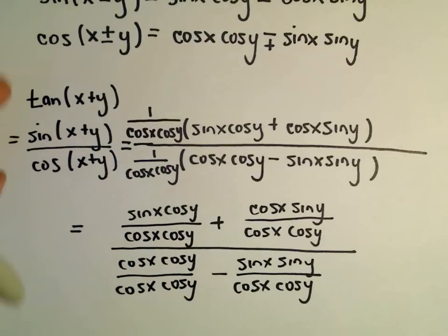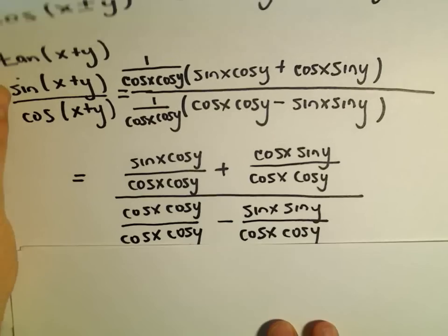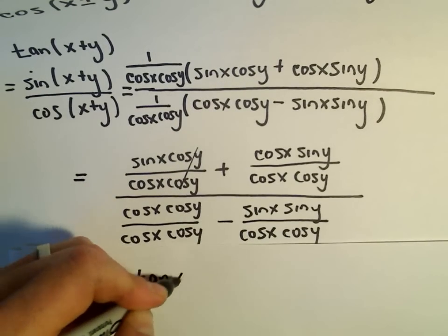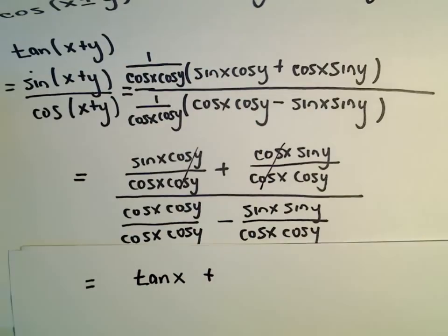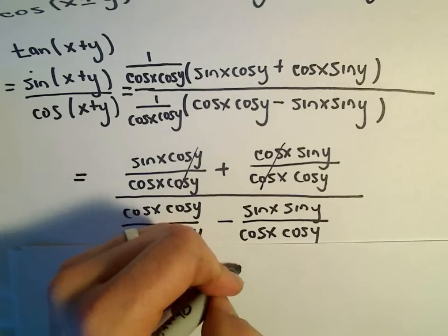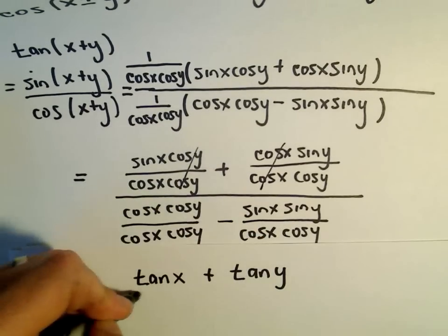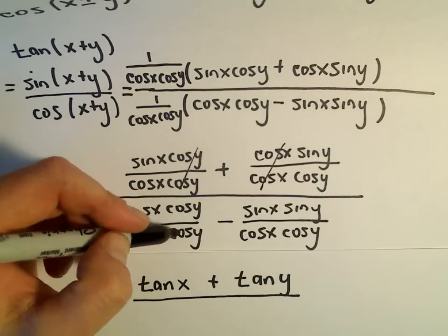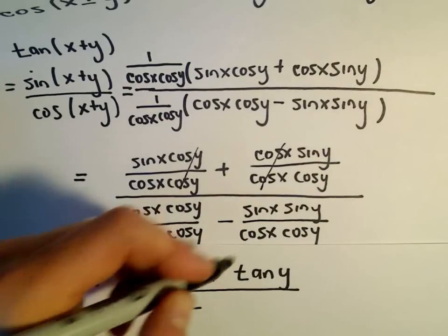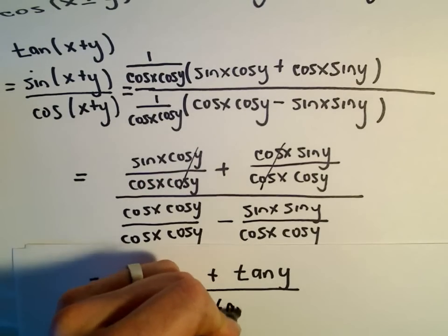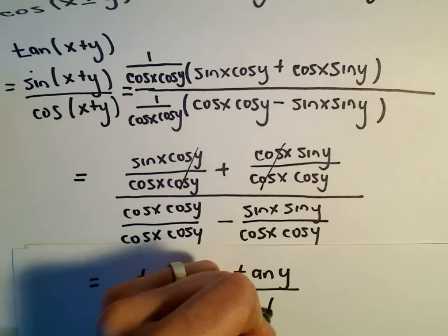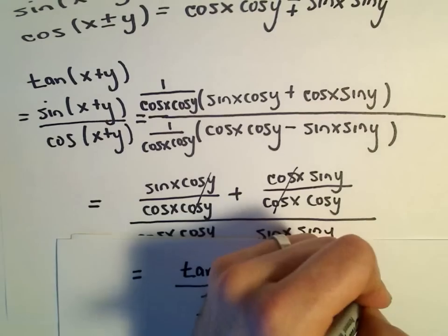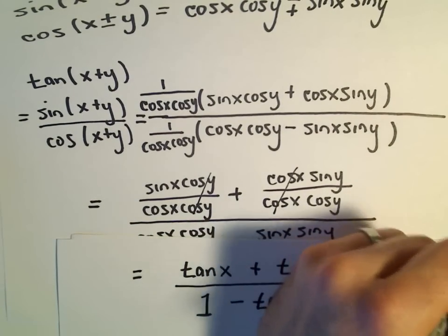Okay, a lot of sines and cosines — all we're going to do now is simplify. In the numerator, in the first term the cosine y's cancel and all we're left with is sine over cosine, which is just tangent of x. In the second term the cosine x's cancel — we've got sine y over cosine y which is tangent y. In the denominator, cosine x over cosine x is 1, cosine y over cosine y is 1, so we get 1, and then sine x over cosine x is tangent x and sine y over cosine y is tangent y. That's the identity for tangent of x plus y.